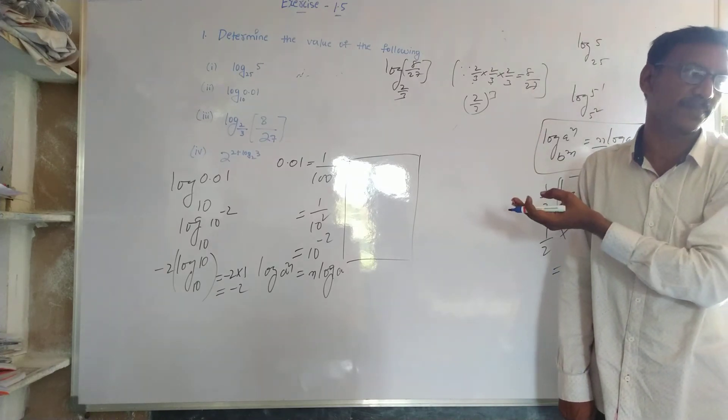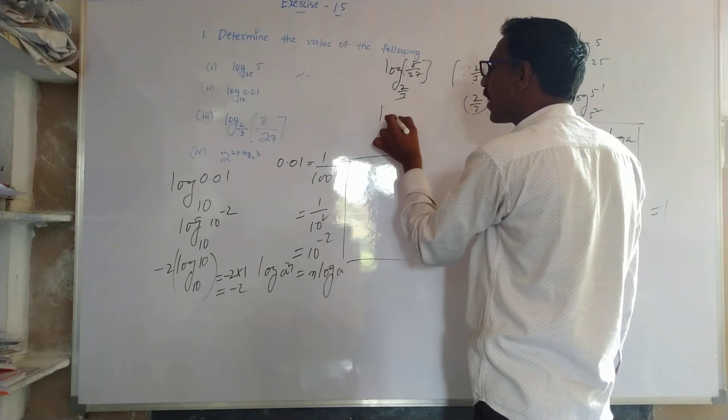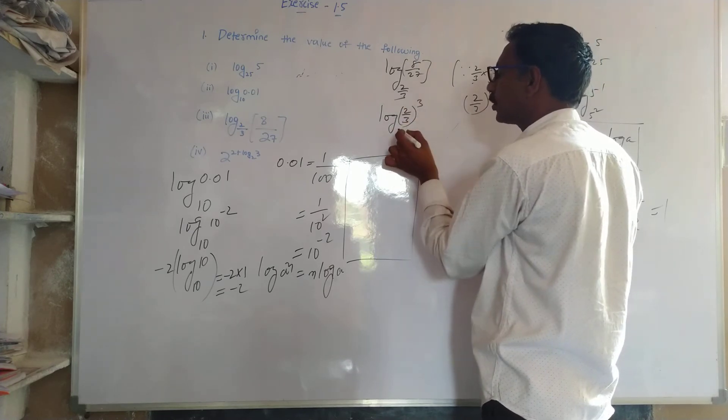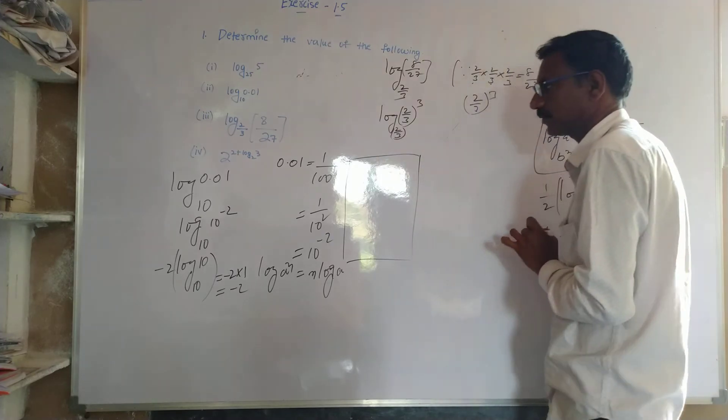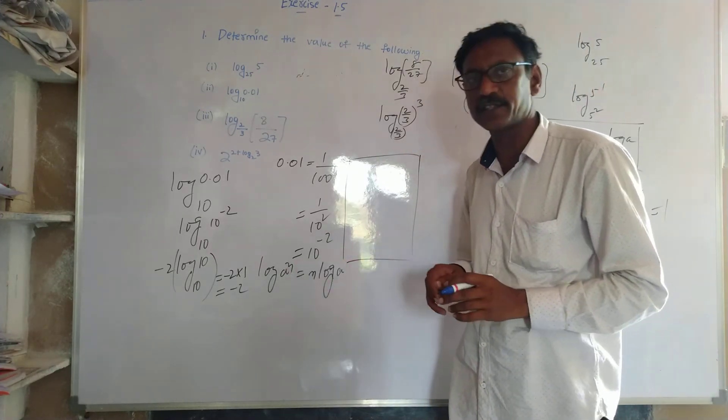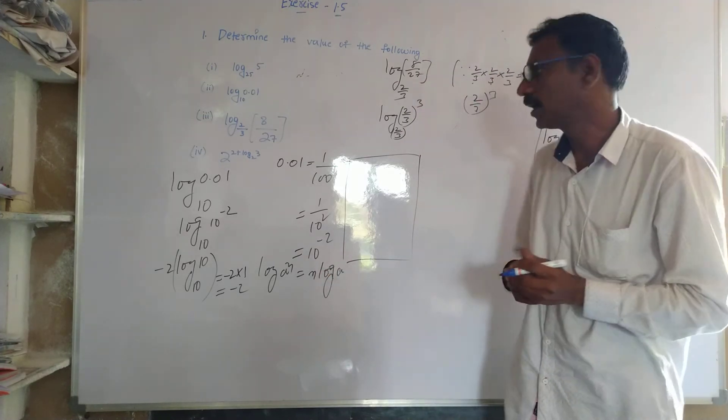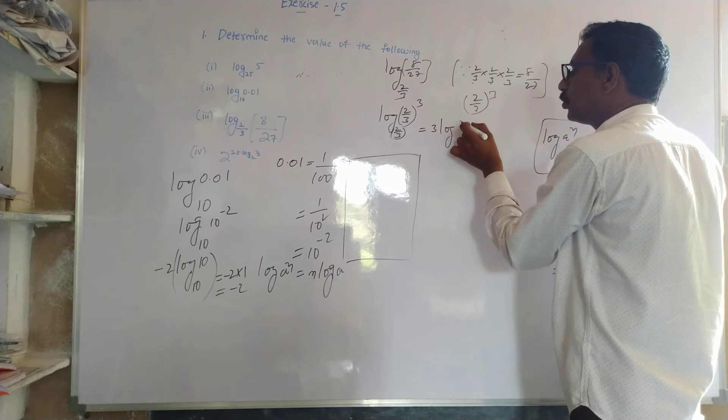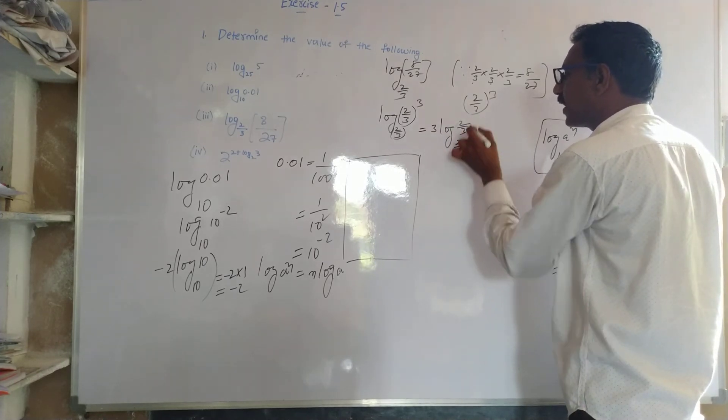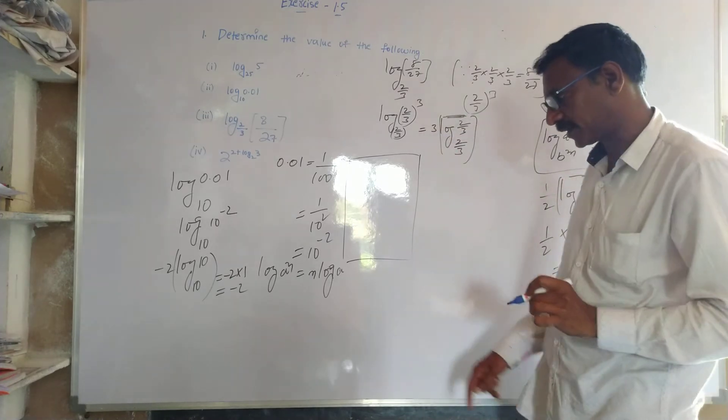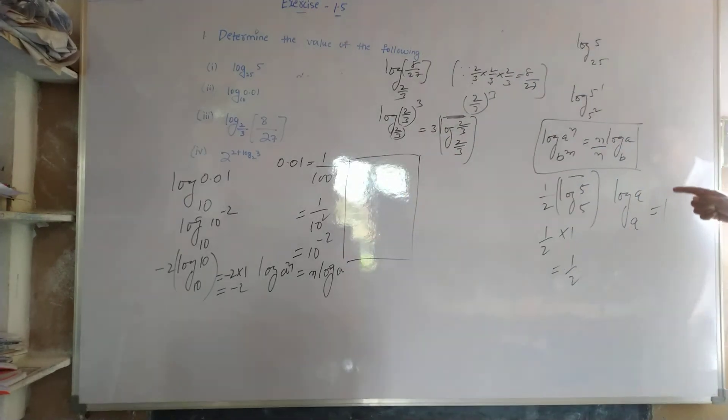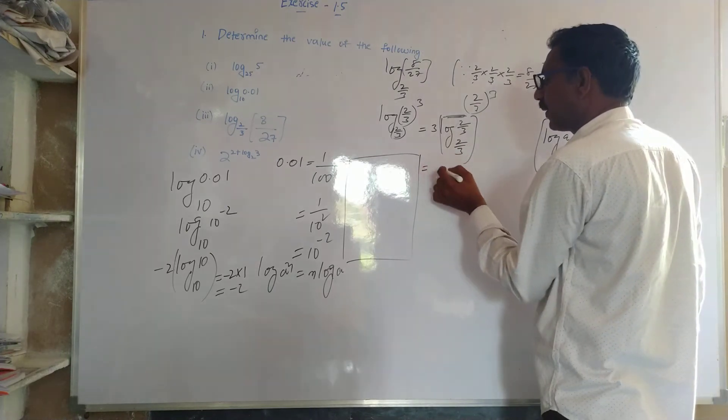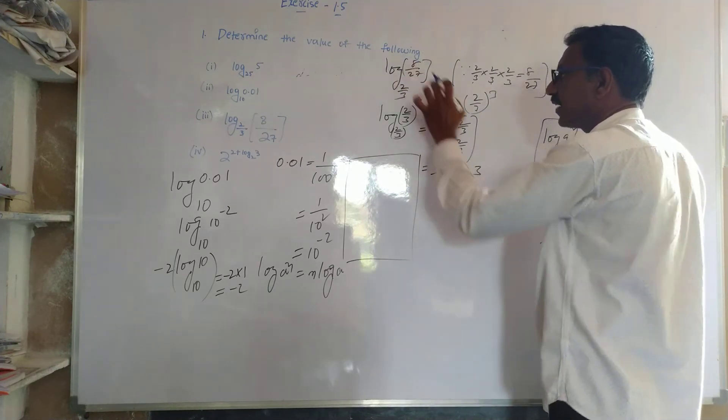By that formula, you can write 3 into logarithm of 2 by 3 to the base 2 by 3. Again, this value is equal to 1, already explained. Logarithm of a base a is always equal to 1. And I am going to write 3 into 1, that is equal to 3. This value can be equal to 1.